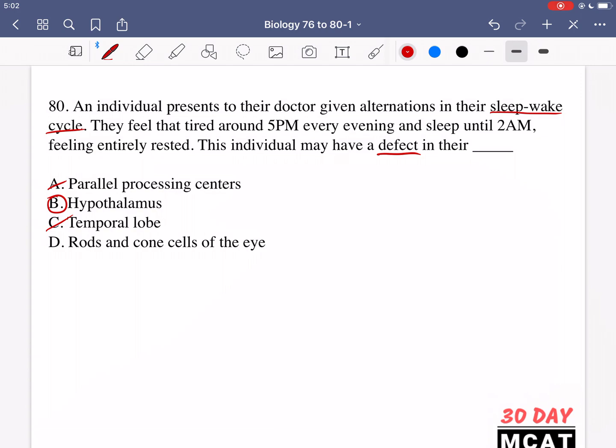And finally, option D is talking about rods and cone cells of the eye. If they had some problem seeing things visually, then we might say that there's something wrong with the rods and the cones. But they're not saying that they have any problems seeing things. It's more so they have some issue with their sleep-wake cycle.